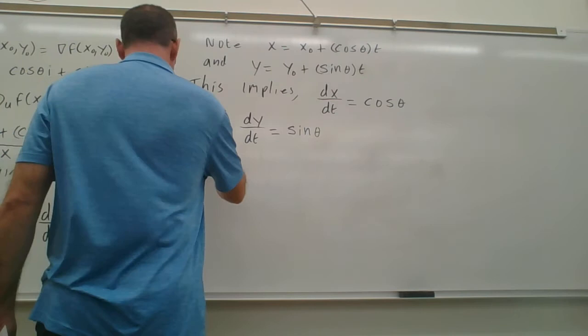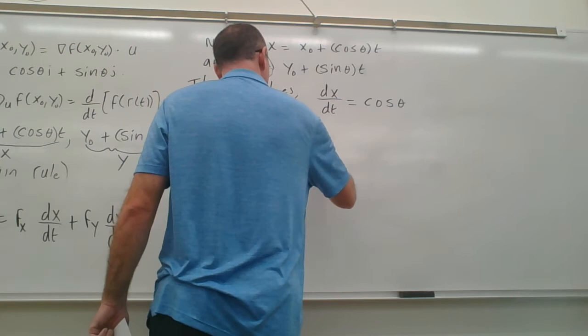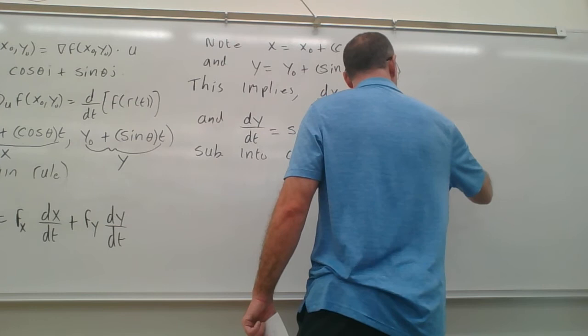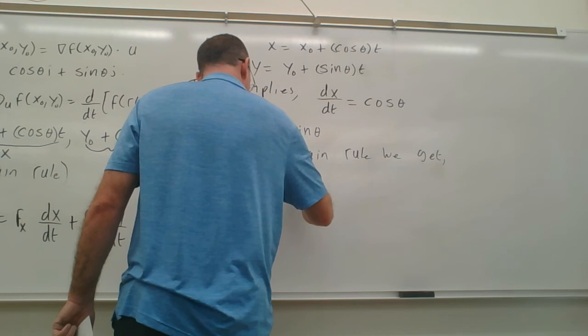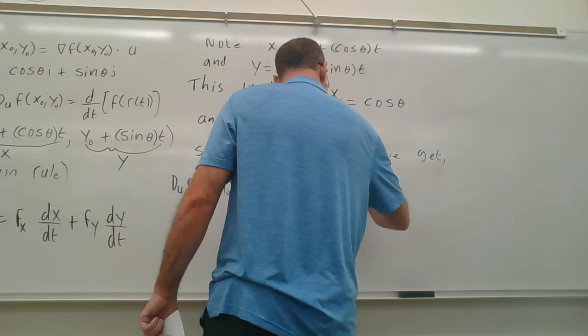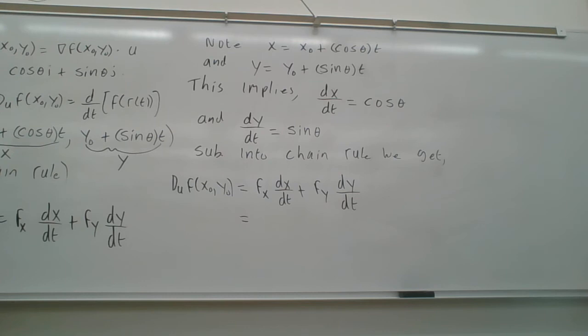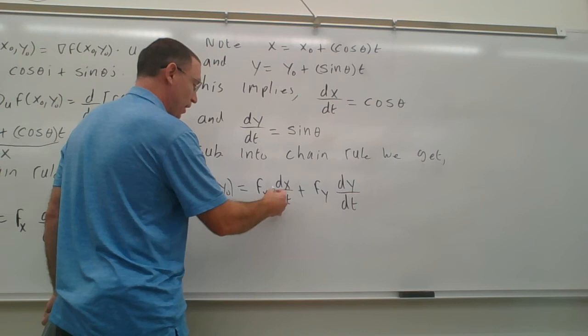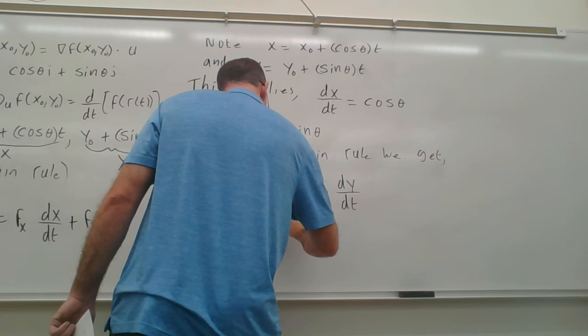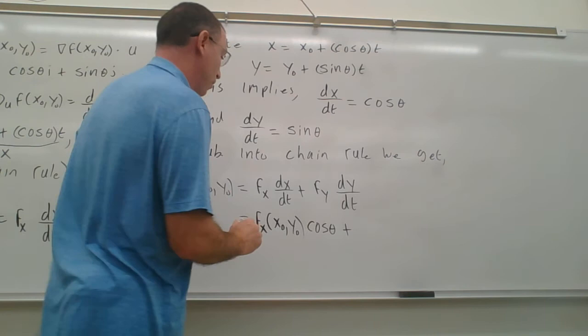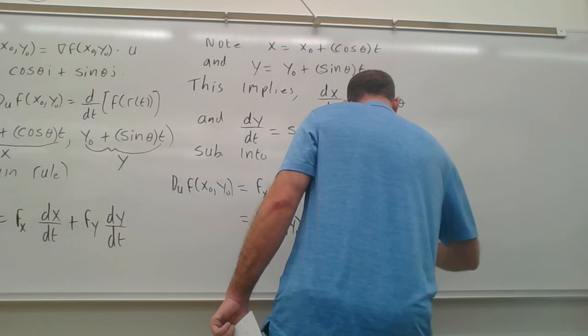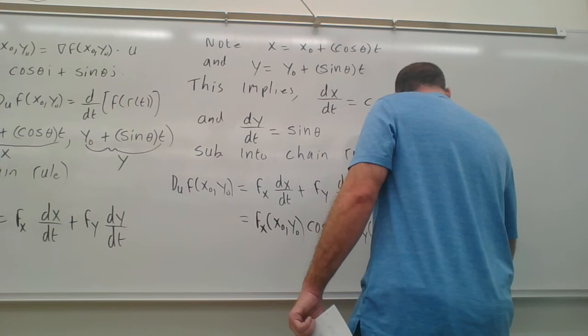Substituting into the chain rule, the directional derivative equals the partial derivative with respect to x at (x₀, y₀) times cos θ, plus the partial derivative with respect to y at (x₀, y₀) times sin θ. Notice we can write this as the vector (f_x(x₀,y₀) · i + f_y(x₀,y₀) · j) dotted with (cos θ · i + sin θ · j).